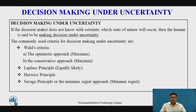Now let's see what is decision-making under uncertainty. If the decision-maker doesn't know with certainty which state of nature will occur, then the decision-maker is said to be making a decision under uncertainty. The commonly used criteria are Wald's criteria — the optimistic approach (maximax) and the conservative approach (maximin) — as well as Laplace's principle, Hurwicz's principle, and Savage's principle. In today's session, we focus on Wald's criteria and Laplace's principle.